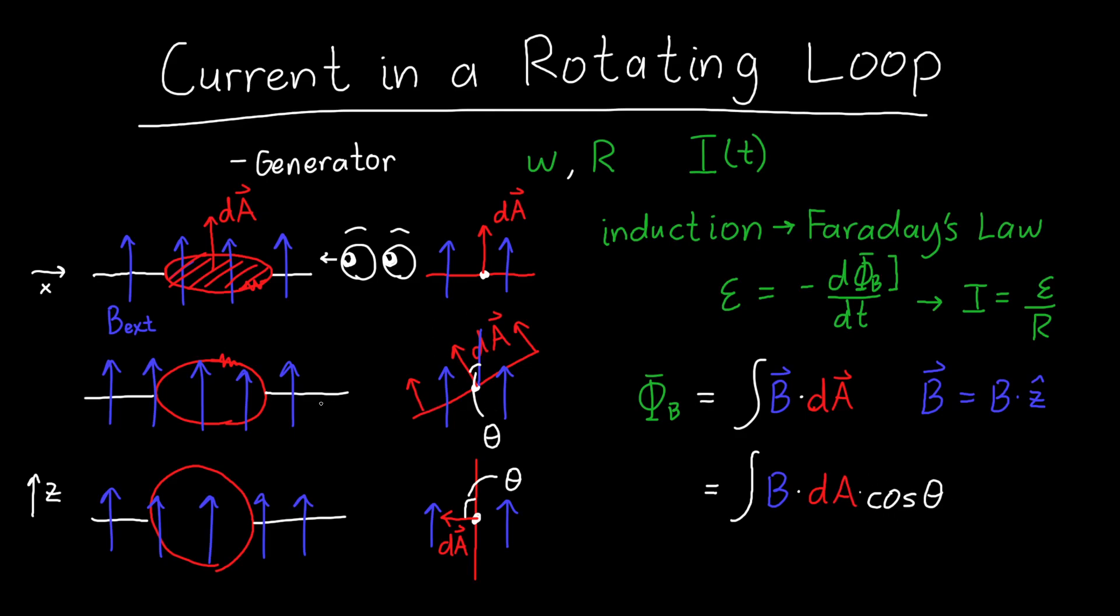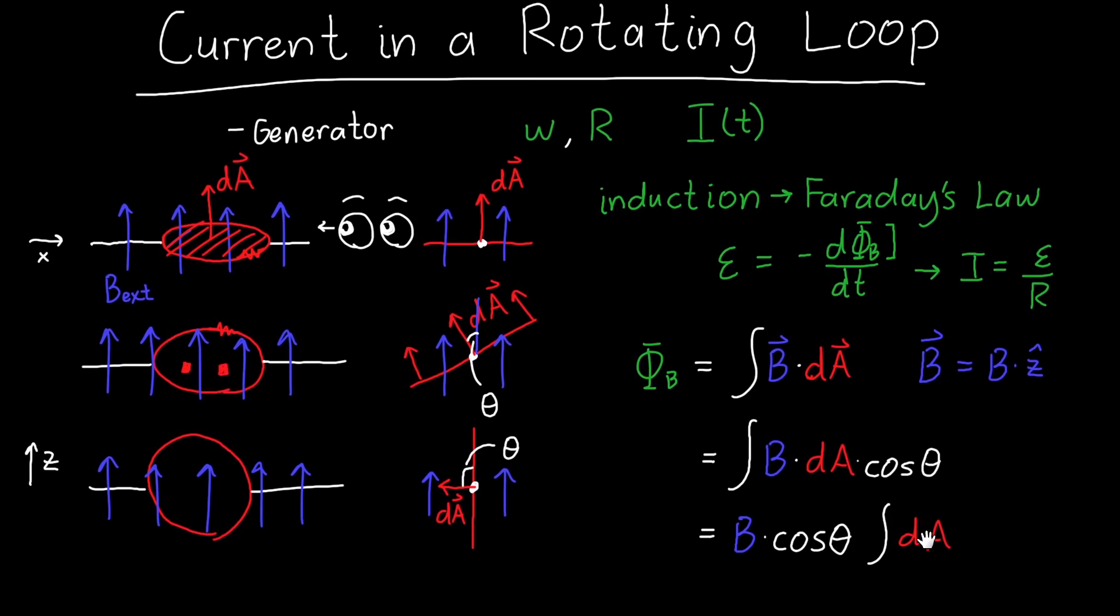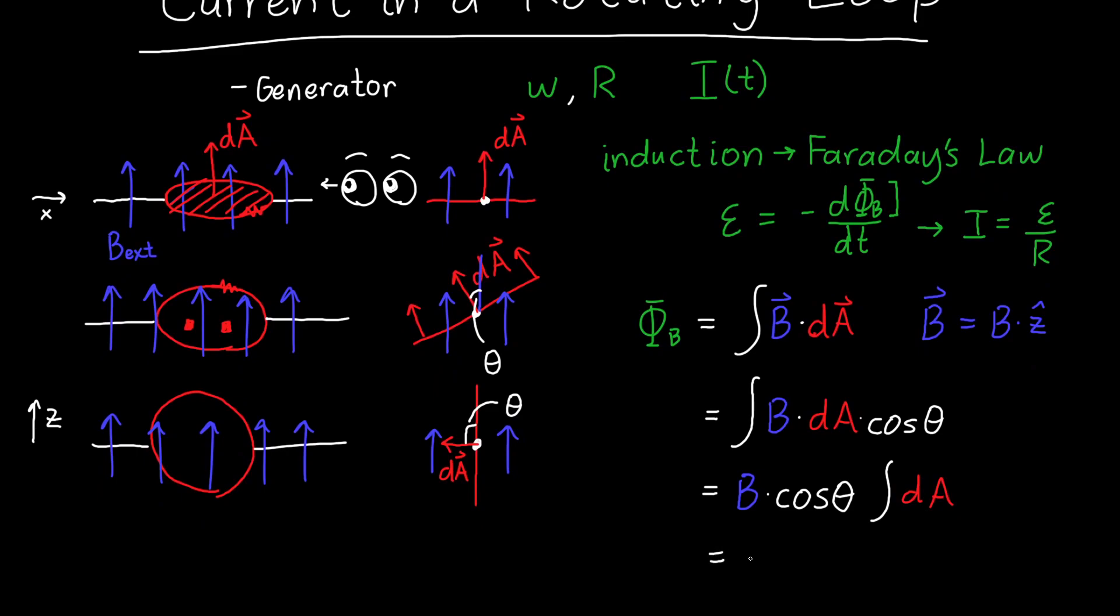And similarly, the external magnetic field I also said was constant. And so we can pull both of those things out of the integral. So we have B times cosine theta times the integral of dA. And this is my absolute favorite kind of integral, because when you add up all the little pieces of area over the surface of our loop, this just becomes A.